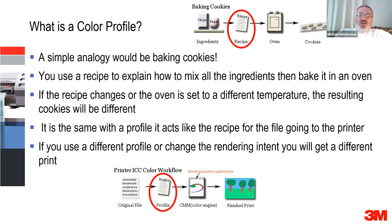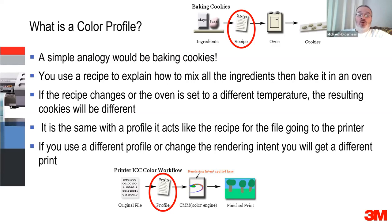If you use a recipe to mix all the ingredients, and if the recipe changes or if the oven is set to a different temperature, the cookies are going to be different. Exactly the same thing happens with the profile — if you change the profile or make something a little bit different in there, you're going to change the way things come out. That's why the color profile is so important to give you a good chance of getting a really good looking image.